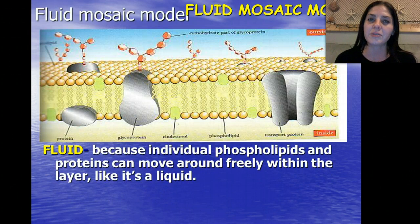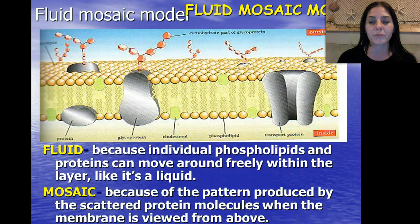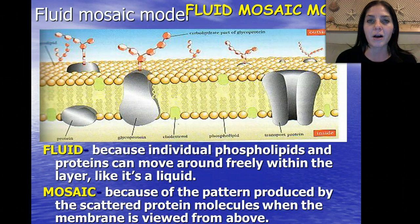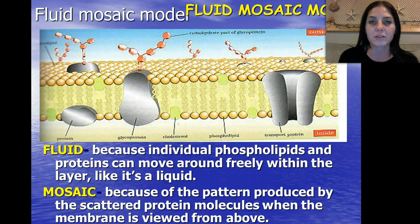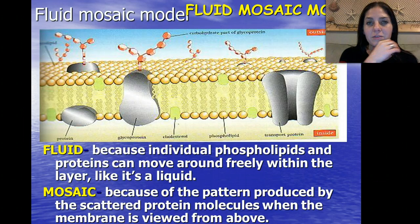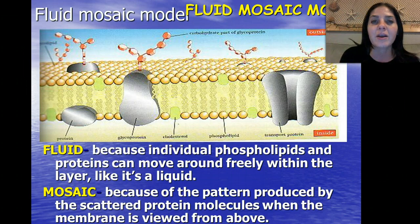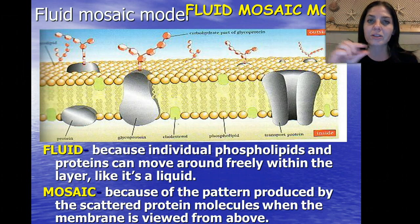The membrane is sometimes referred to as a fluid mosaic model. Fluid because the membrane moves like a fluid, and mosaic because it's like a work of art. If you look at the cell membrane from above, all of the different proteins and components make up a mosaic art piece — like tiles in a museum mosaic that together form a big picture.